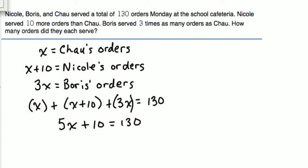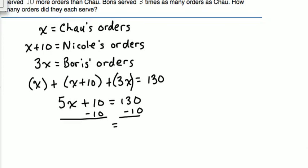Next, we want to get all the variables on one side of the equation and all the numbers on the other side. There are no variables on the right, so we leave the variables on the left and move the numbers to the right. In order to do that, we're going to subtract 10 from both sides of the equation. We bring down the 5X; positive 10 and negative 10 add up to 0, so all we have left on the left side is positive 5X. 130 minus 10 is 120.